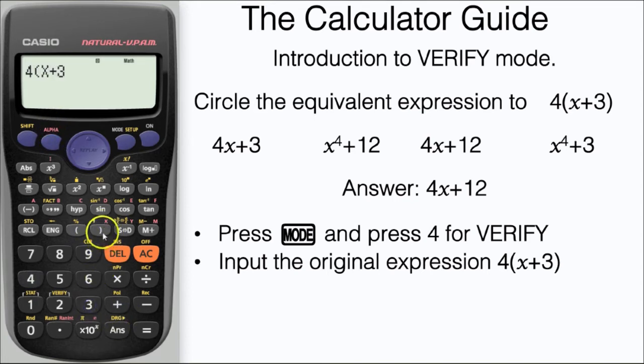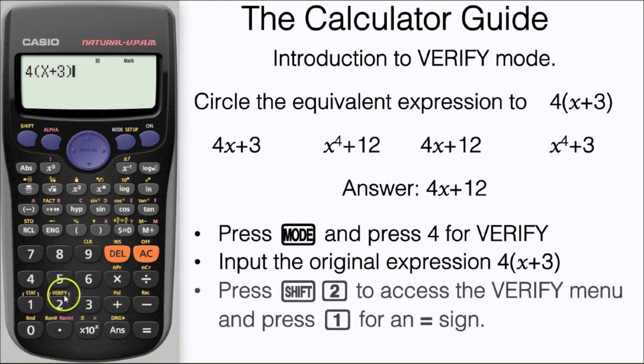Don't forget to use alpha and right bracket to enter an x. Now we want to access the verify menu which is here just above number 2. To do that we need to press shift and then 2. We need to do that rather than press equals at this stage.